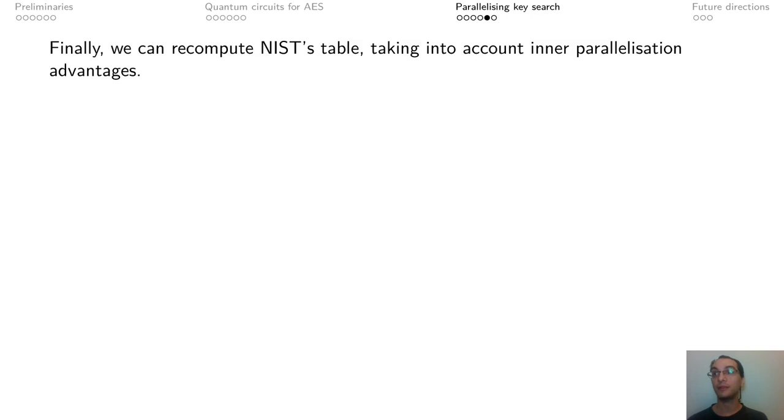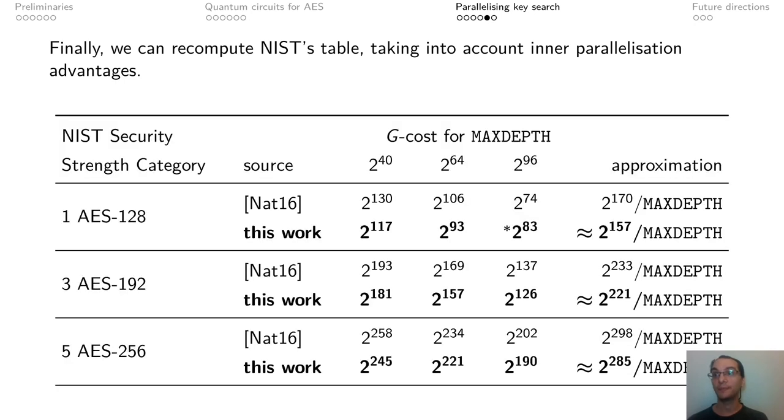Finally, we have compared the table from the NIST call for proposals with the numbers from our analysis. This is the resulting table. By looking at the approximation column, which tries to interpolate the various attacks, we can see that we knocked off about 13 bits, in some sense, of quantum security against AES. Of course, these remain highly impractical black-box attacks. But at the same time, in some sense, it means that the proposed quantum schemes are somewhat more secure, because it's easier to be as secure as AES.